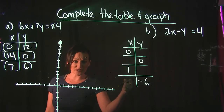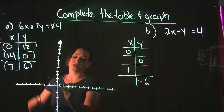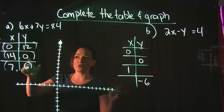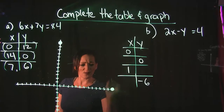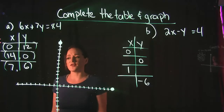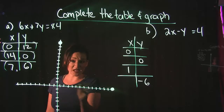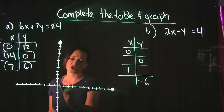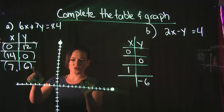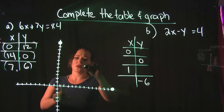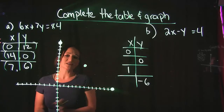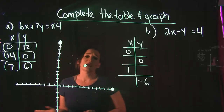Our next point is (14, 0). Starting at the origin, positive means to the right, so we go right 14. The Y value is 0 so we don't go up or down — we stay put at (14, 0). Our third point is (7, 6): from the origin, go right 7 in the X direction and up 6 in the Y direction. You can see all three points are forming a line.